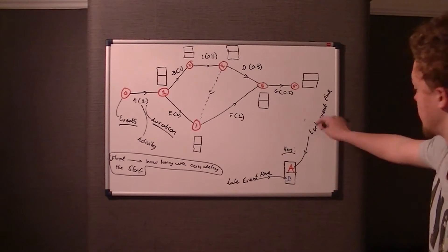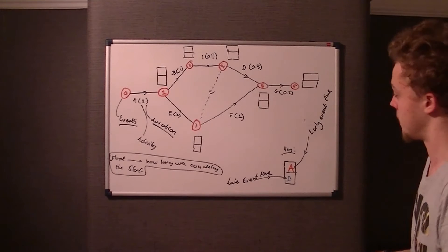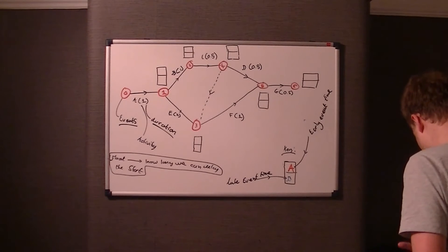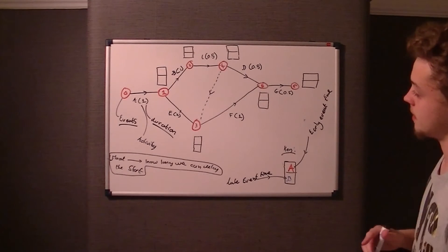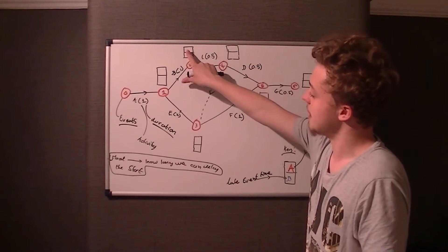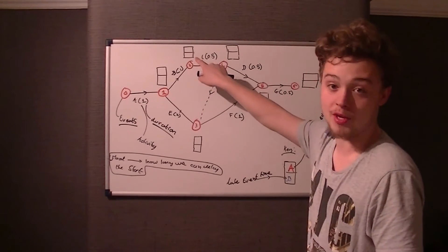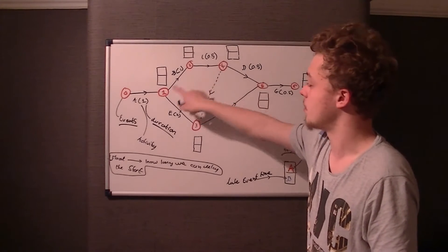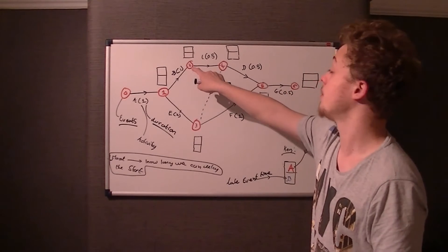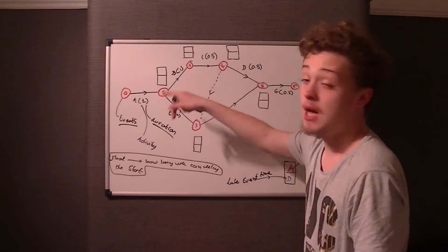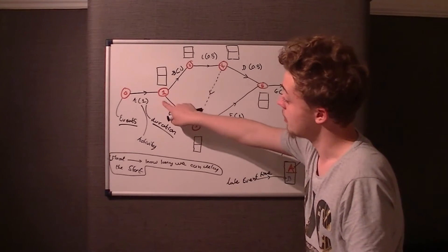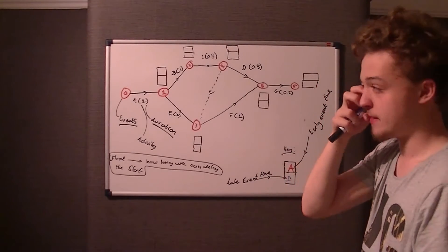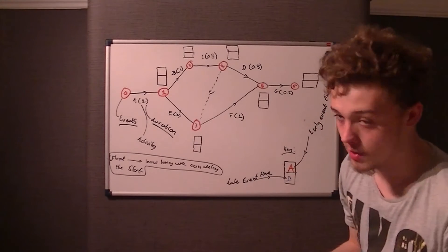To give more substance to the Early and Late Event Times: the Early Event Time simply means the earliest time you can arrive at the event with all the incoming activities completed. For example, the early event time at event two: you've got to complete activity A and activity B before you get to event two — you can't just jump to event two.